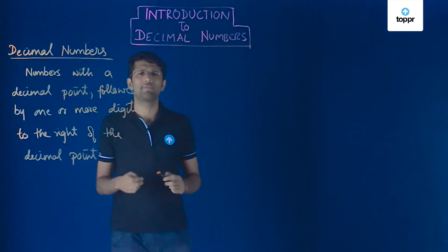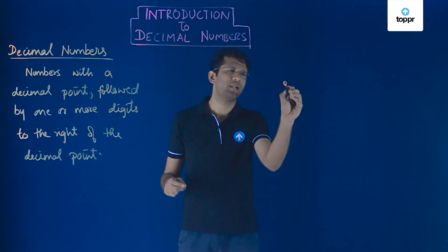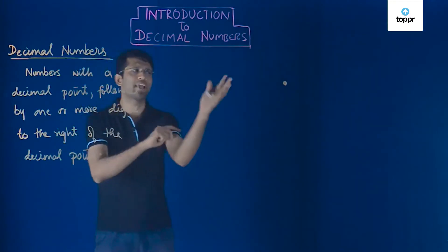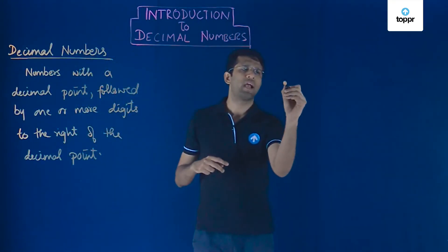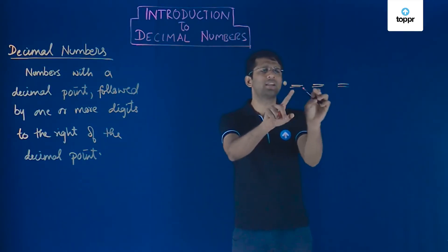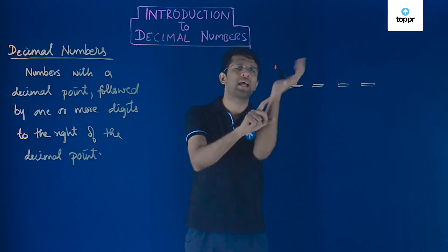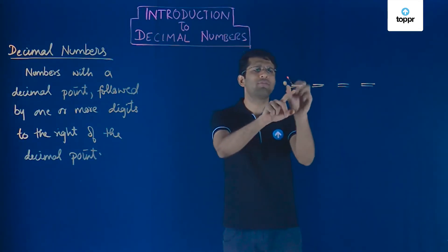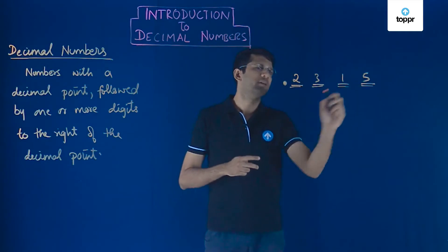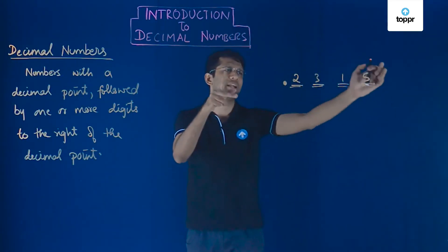Let us now understand this definition by means of an example. When we want to write a decimal number, we first write a decimal point here. To the right of the decimal point, we have blank spaces — these are the places to the right of the decimal point. If we fill those with digits say 2, 3, 1 and 5, we have a decimal point followed by one or more digits to the right, so we call this a decimal number.